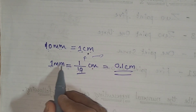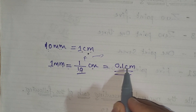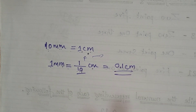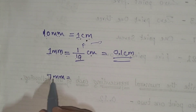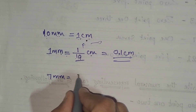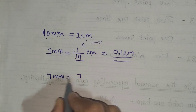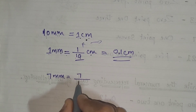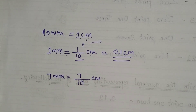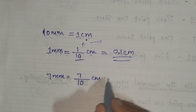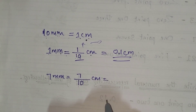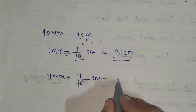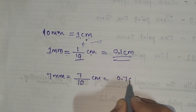So 1 millimeter equals 0.1 centimeter. Let's take one more example: 7 millimeters equals 7 divided by 10 centimeters. In decimal form, 7/10 is 0.7 centimeter.